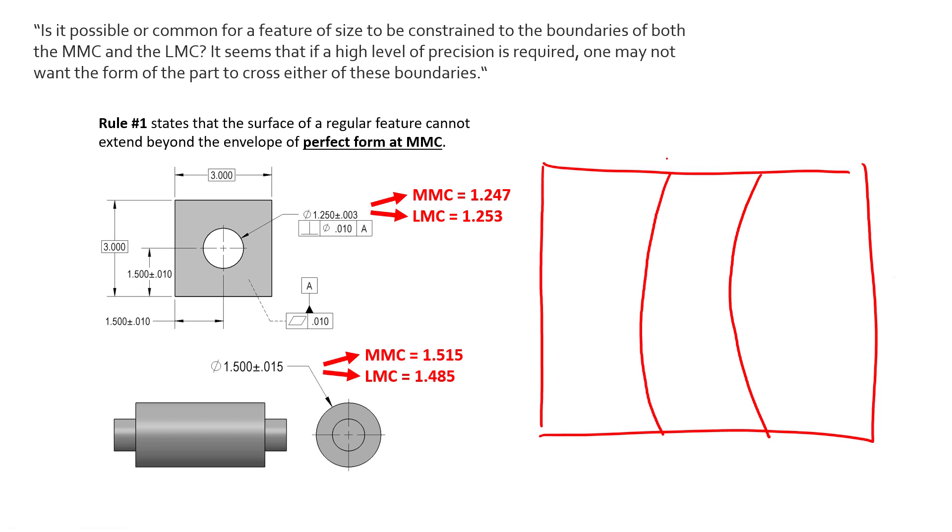So our envelope is a perfect cylinder and its size is MMC 1.247. So if the cross sections of this, or the local sizes if you will,